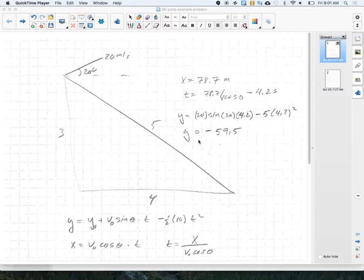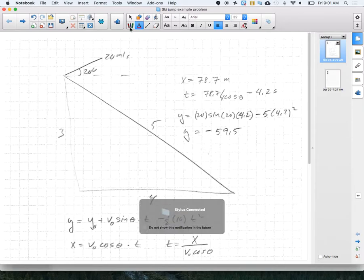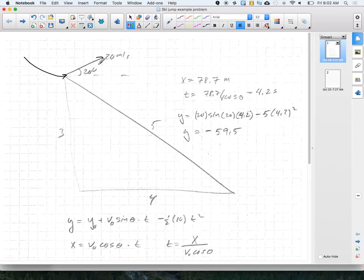I have a ski jumper coming down and then taking off at some angle. He's going to leave at 20 meters per second at a 20 degree angle, and the hill is a 3-4-5 triangle.